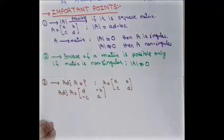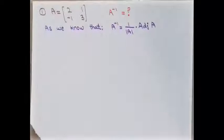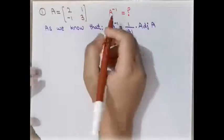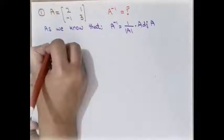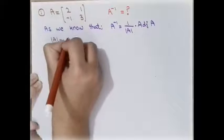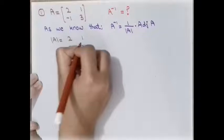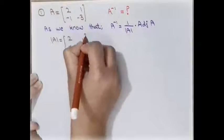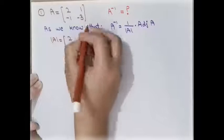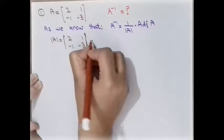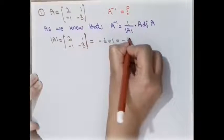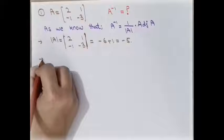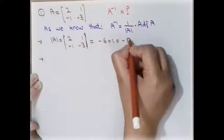After these three points it is very easy to find the inverse of a matrix. Moving on to the examples: here is the first example, a 2×2 matrix, and we have to calculate its inverse. Using our formula, first we calculate the determinant of the given matrix. The parallel straight lines indicate the determinant, which equals minus six plus one, which equals minus five.